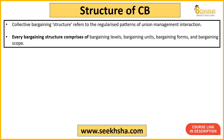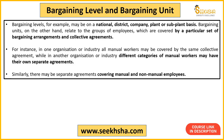The next thing we will discuss is the structure of collective bargaining. When we use the term 'structure', it addresses how we can regularize the interaction between management and workers — what pattern will be followed. The bargaining structure follows: bargaining level, bargaining units, bargaining forms, and bargaining scope. First — bargaining level: for example, national, district, company, plant, or sub-plant basis.